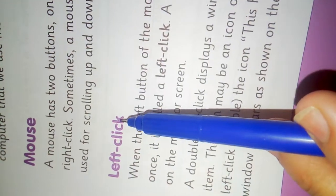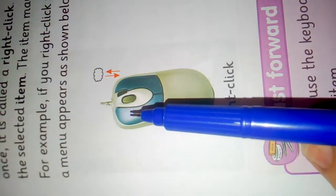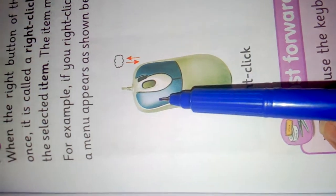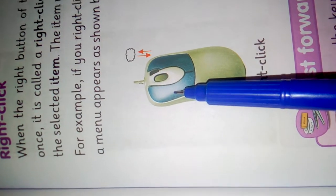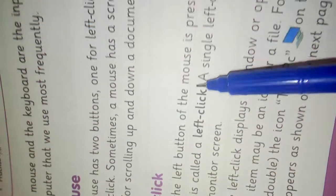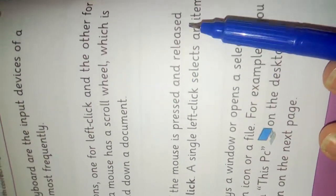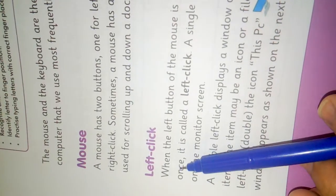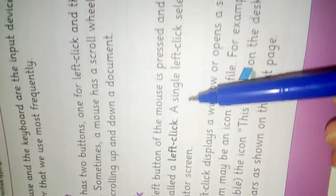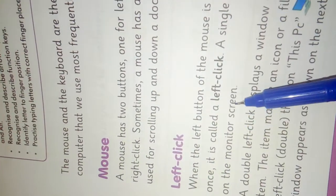Left click: the left side button is used for left click. When the left button of the mouse is pressed and released once, it is called a left click. A single left click selects an item on the monitor screen.